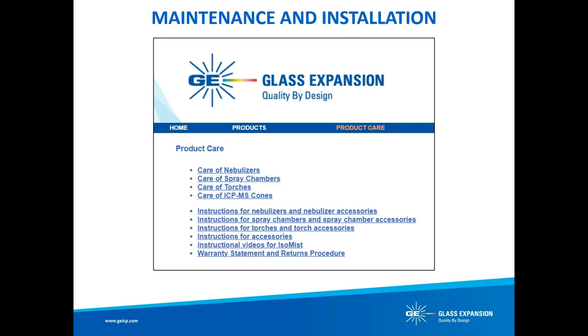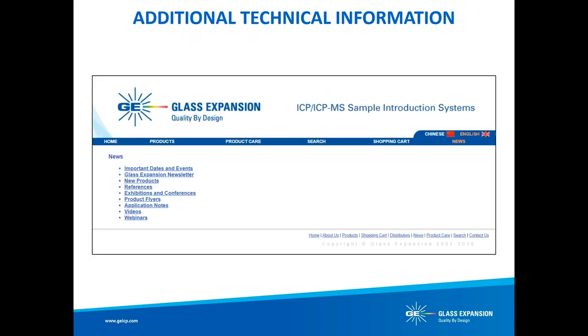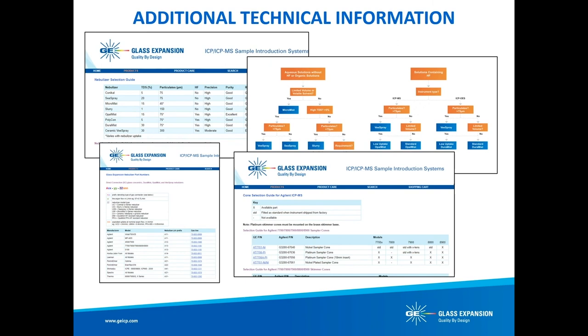Under the product care section, you can find detailed procedures for cleaning and maintaining many of our products, as well as installation and operation instructions. Under the news section, you can find links to technical information such as application notes, video tutorials, webinars, and our highly informational newsletter. This is just a small sampling of what is available on the Glass Expansion website — there is much more available, such as selection guides for nebulizers, spray chambers, cones, and more.